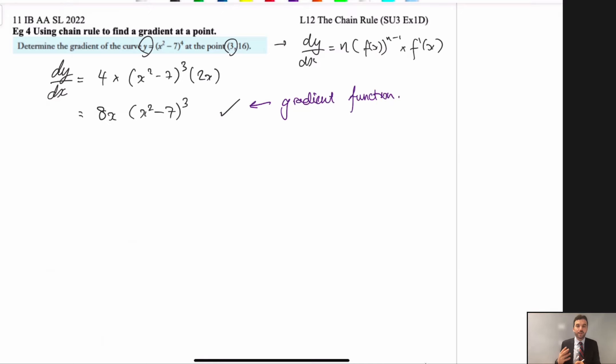Next step is you want to find the gradient at the point (3,16). So I'm going to say, okay, well, we know when x is equal to 3, we can plug that into our gradient rule and find the gradient at x is equal to 3. So you go let x is equal to 3, sub it in.